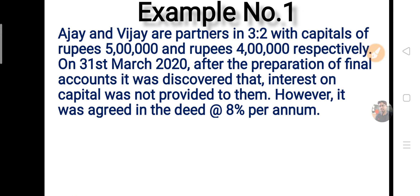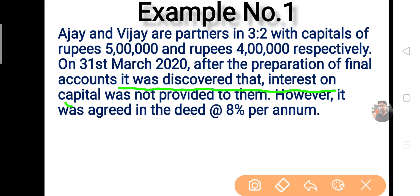Now it's time for the numerical part। ध्यान से question में error को recognize सही तरीके से कर गए, तो definitely सही solution कर जाओगे — क्योंकि rule तो वही लगना है बार-बार। Question 1: [After preparing accounts] it was discovered that interest on capital was not provided, which was agreed at 8% per annum। Mistake: interest on capital जो दिया जाता था, वो नहीं दिया। Correction: जो देना भूले थे, अब दे देंगे।